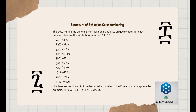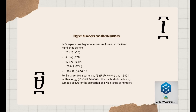Structure of Ethiopian Ge'ez Numbering: The Ge'ez Numbering System is non-positional and uses unique symbols for each number. Here are the symbols for numbers 1 to 10: 1, 2, 3, 4, 5, 6, 7, 8, 9, 10. Numbers are combined to form larger values, similar to the Roman Numeral System. For example, 11 is 10 plus 1.